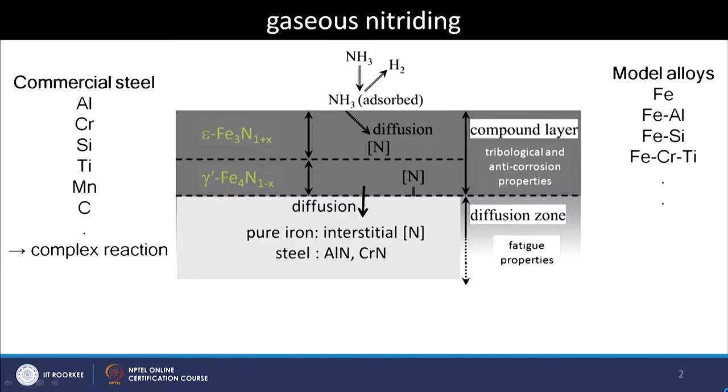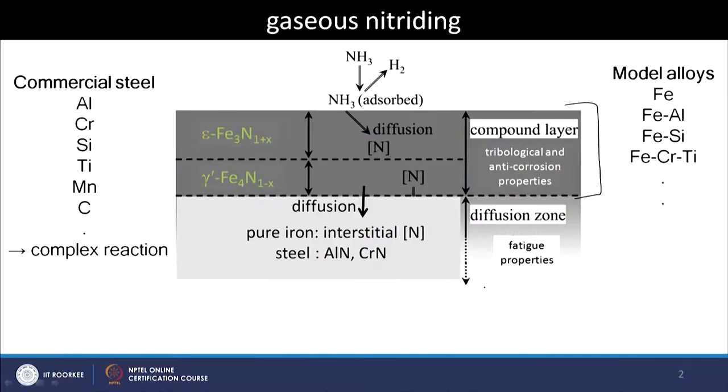In this slide what is shown is the schematic microstructure, which we discussed in the last class. We have an outer layer called the compound layer, often called the white layer, because when you do metallographic preparation of the nitrided specimen cross-sections and etch with nital and view under the light microscope, all the iron nitrides appear white because they do not get etched and simply reflect back all the light. That is why it is also known as the white layer, especially in industry.